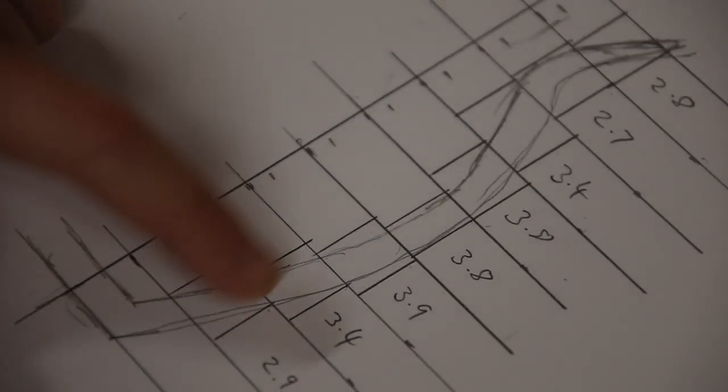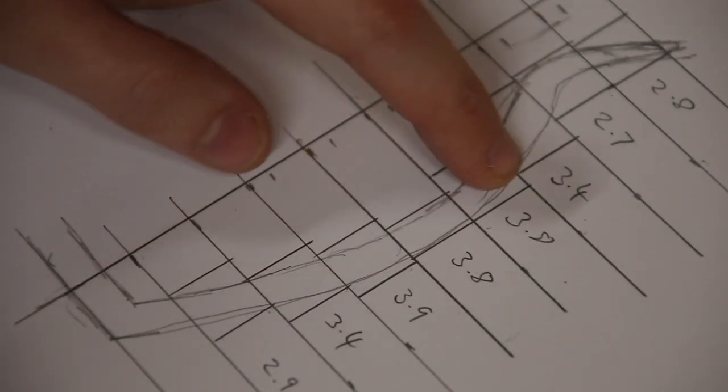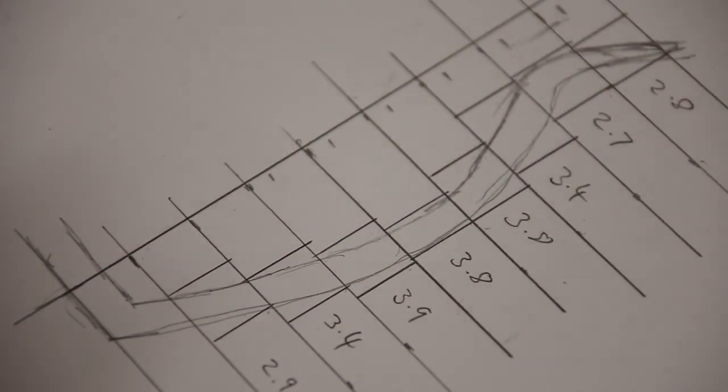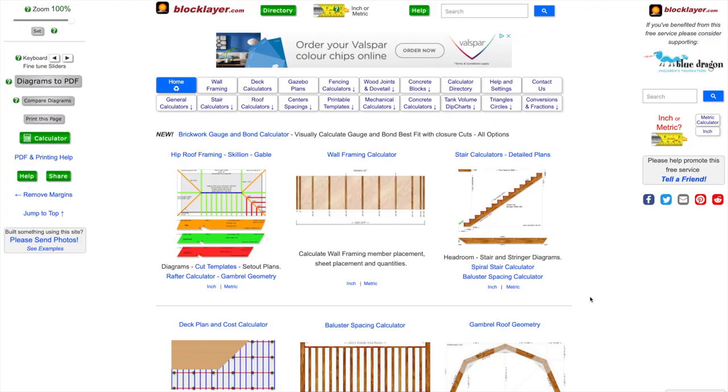This number is in centimeters, the radius of each segmented ring. The next step is to go to blocklayer and input these into the segmented turning calculator. Now we're here on blocklayer.com, I'll put a link in the top of the description to where you can get here yourself.